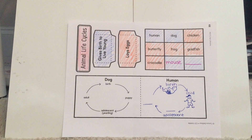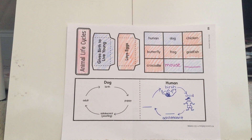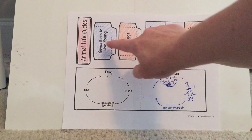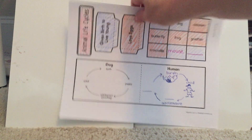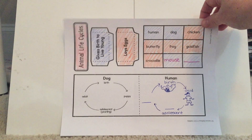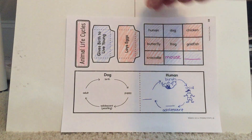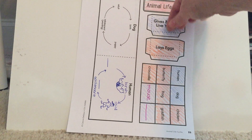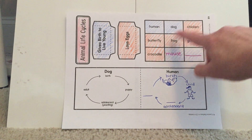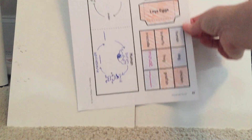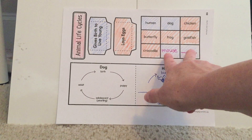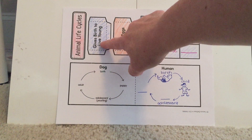You will cut these parts out and come up with two more. Here I've done one example: you put 'Animal Life Cycles' at the top of your notebook and place your two pockets — one that says 'gives birth to live young' and one that says 'lays eggs.' I've color-coded mine. Humans give birth to live young, so that card goes in the first pocket. Animals that lay eggs include butterflies, frogs, goldfish, chickens, and crocodiles — those go in the laying eggs pocket. You'll need to come up with two animals that give birth to live young to put in that pocket.